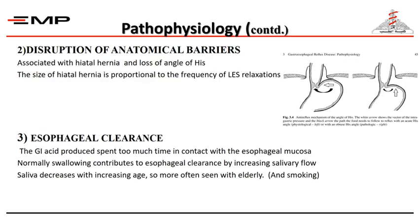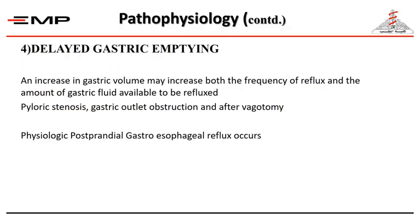The second component contributing to reflux disease is disruption of the anatomic barrier associated with hiatus hernia and loss of the angle of His. Esophageal clearance — the effect of peristalsis — works to antagonize and clear acid reflux from the stomach. Delayed gastric emptying also contributes to GERD by increasing gastric volume, the frequency of reflux, and the amount of gastric fluid available to reflux. It results from pyloric stenosis, gastric outlet obstruction, and post-vagotomy.